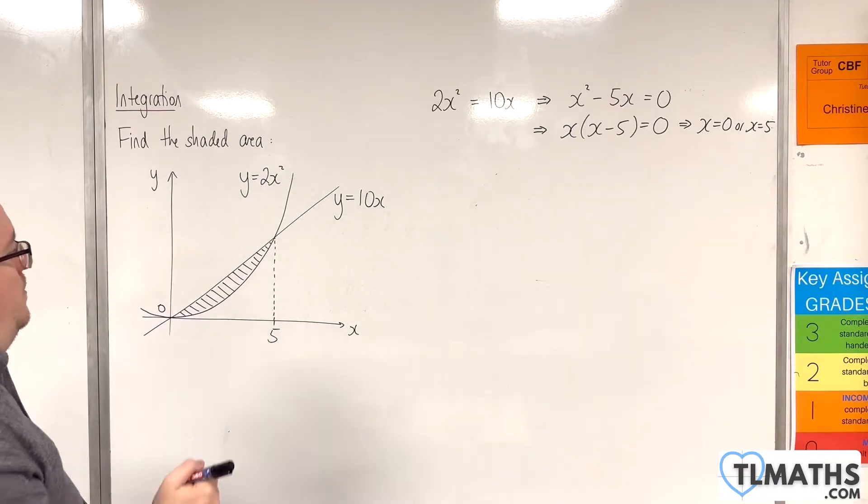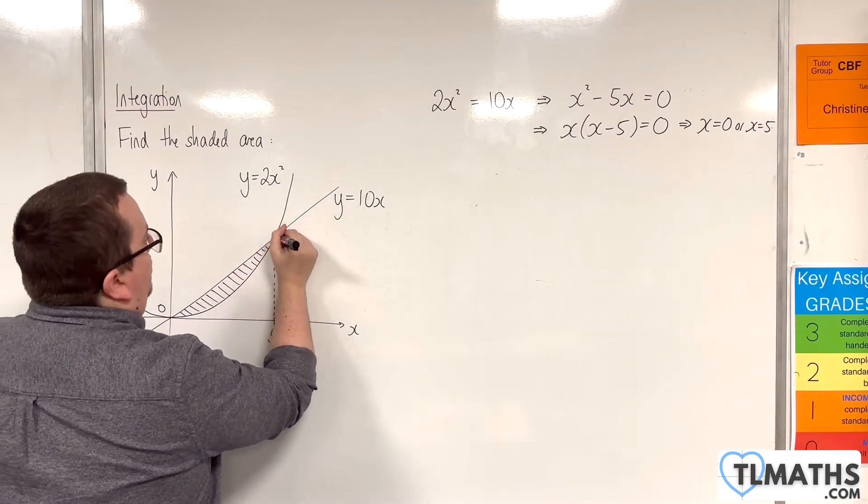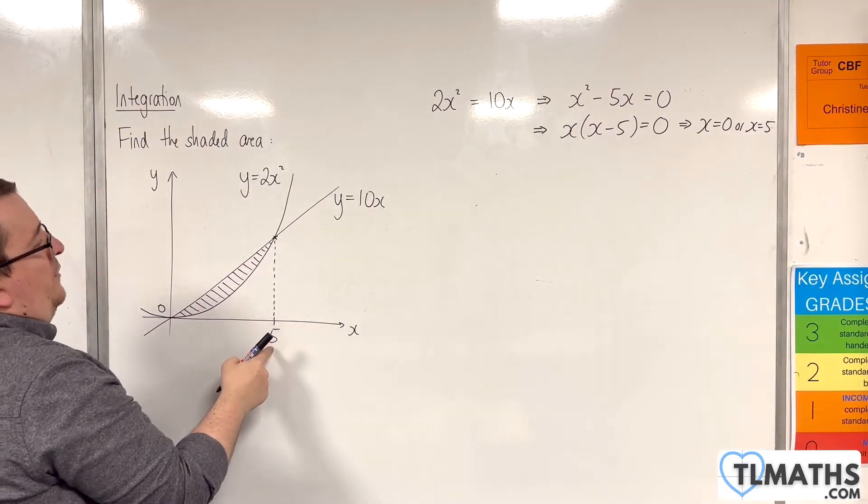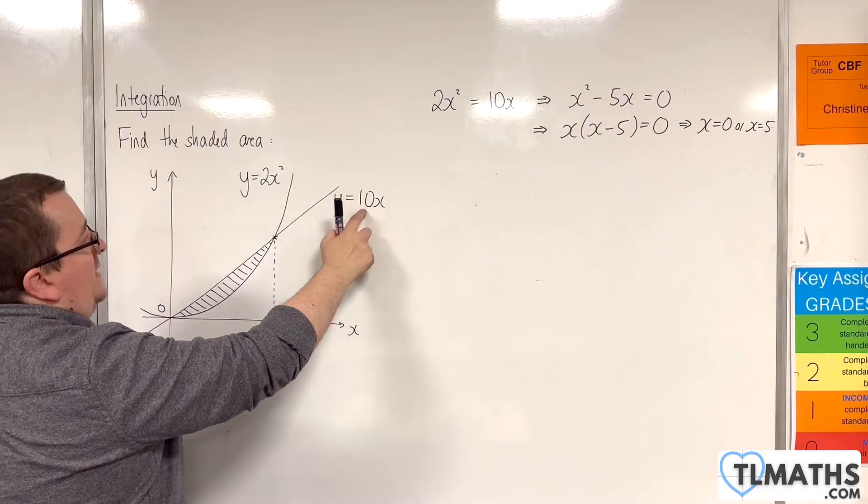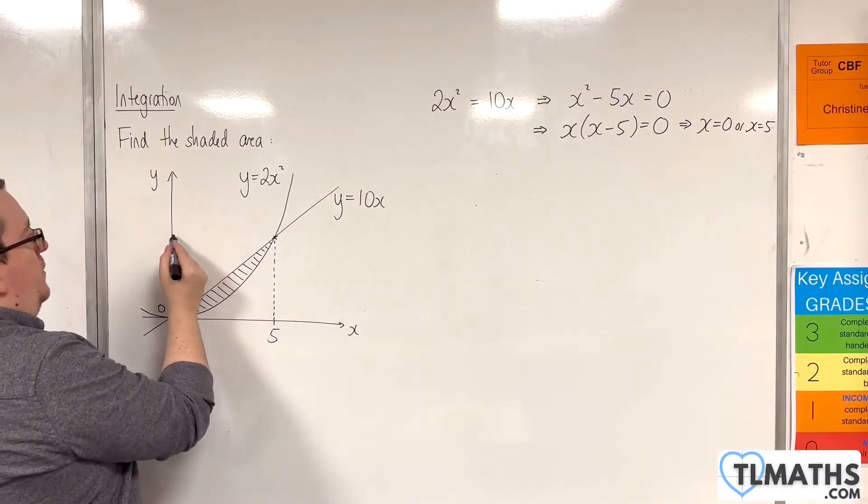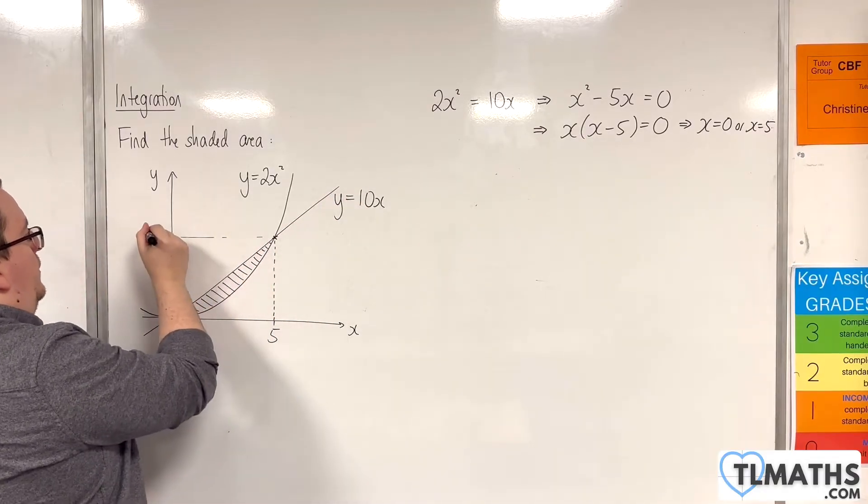Now because that x value is 5, this point here must have coordinates of 5 and then 50. So 5 going into that, 10 lots of 5 is 50. So that's 50 there.